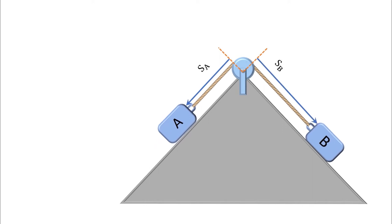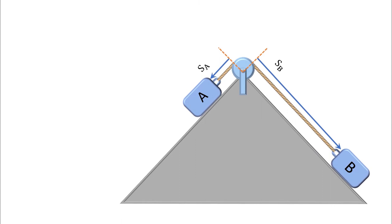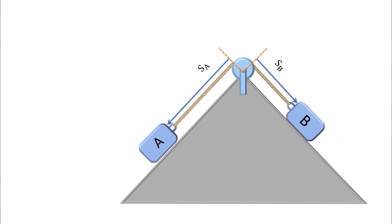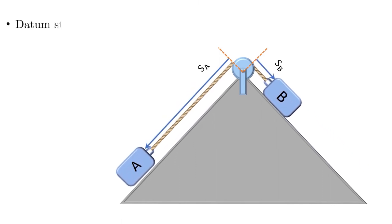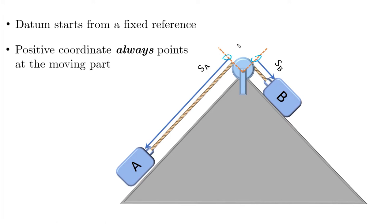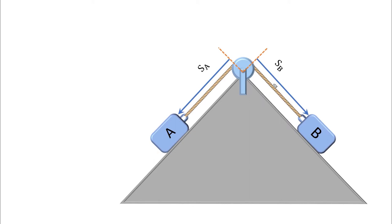As you can see, the two coordinates move together — one increases, the other decreases. Rule number one: the datum has to start from a fixed reference. Rule number two: the positive coordinate always points at the moving particle, as shown by the arrows pointing at the moving objects.